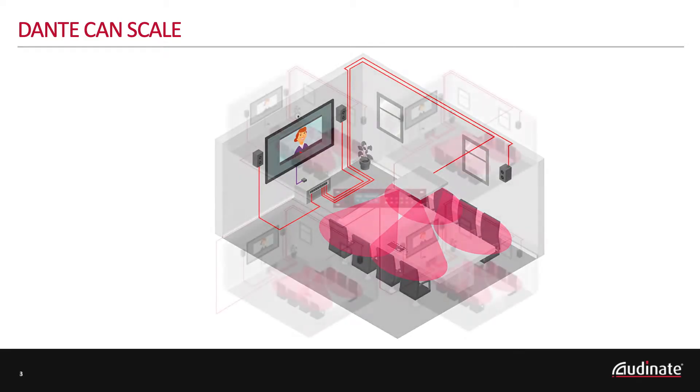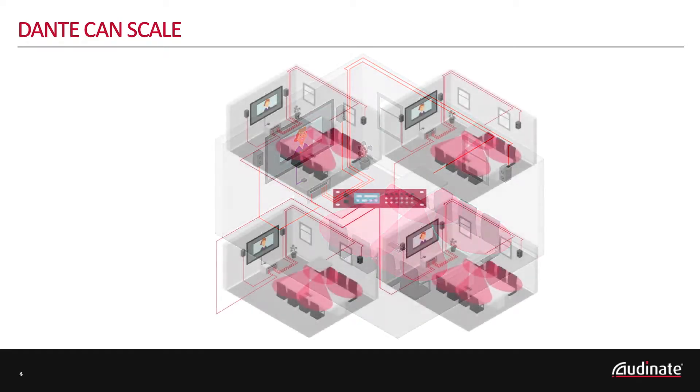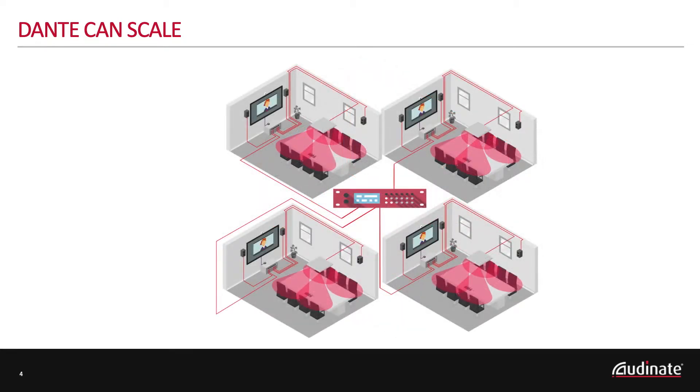Fiber extends distances even further. A single DSP can address several different rooms and even be located in a central closet if desired. Dante gives you the ability to save money and centralize key components using the power of your existing network.